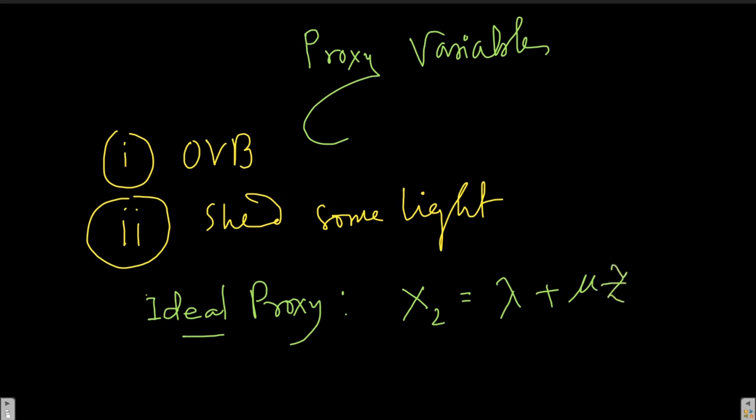Let's say z is the proxy variable, x2 is IQ, and z is education. IQ and education are related linearly, though this may not be the case in reality. I can establish a linear relationship, but I don't know lambda or mu because I don't have data on x2 IQ.